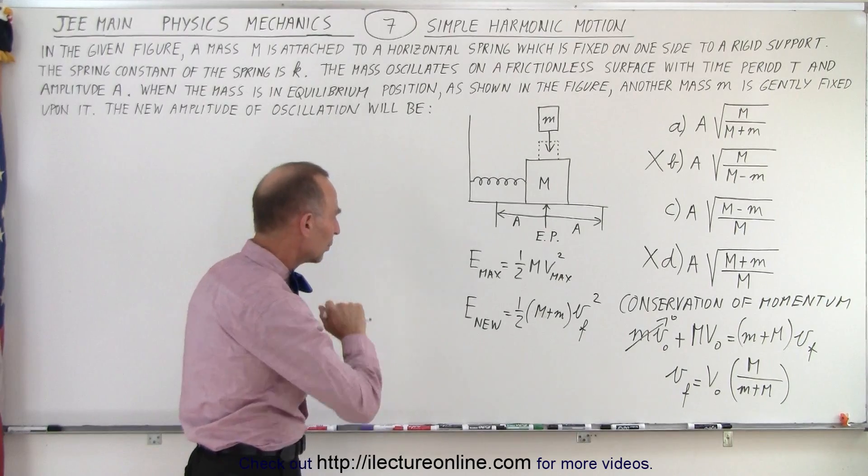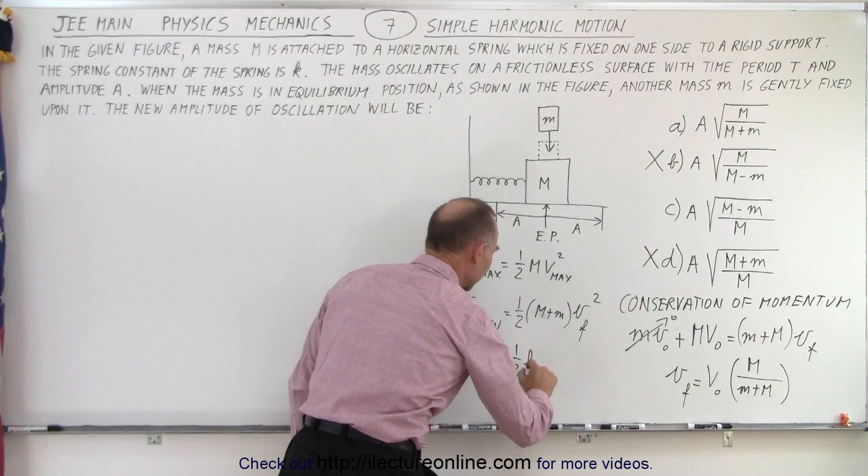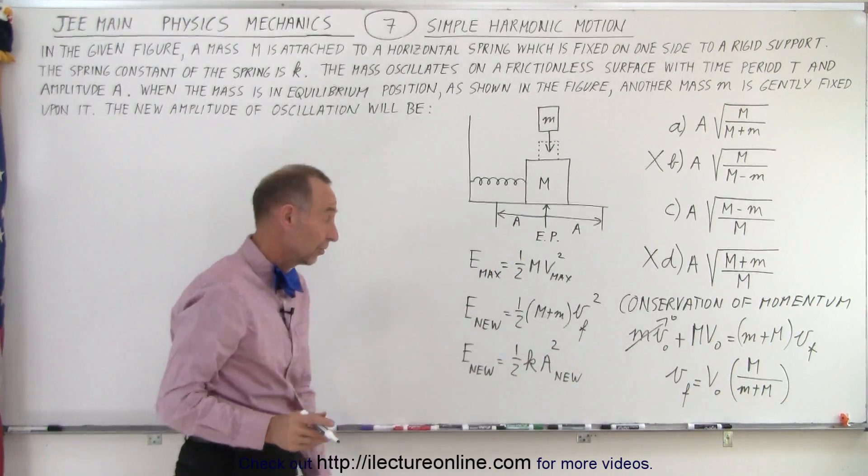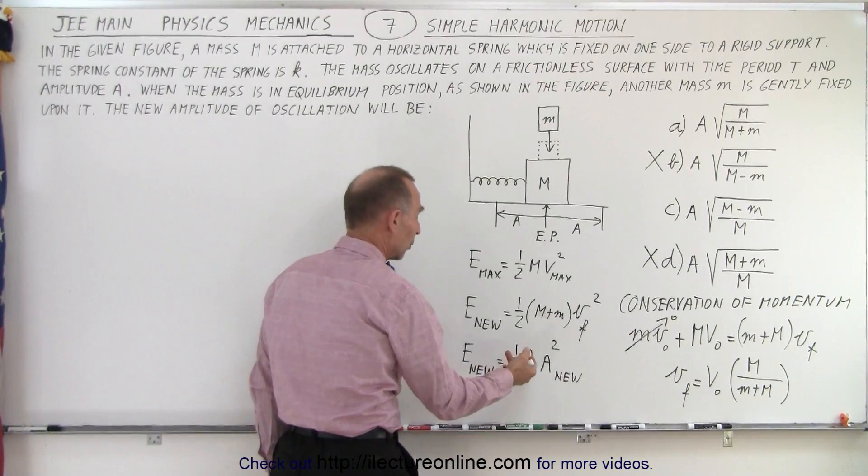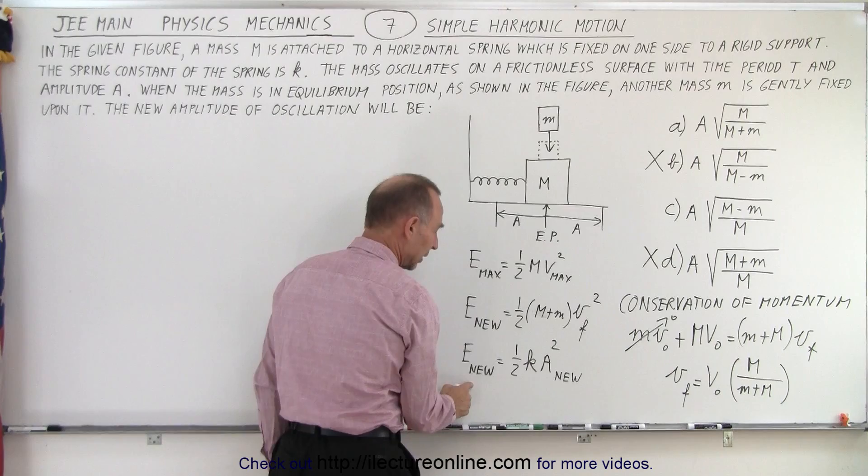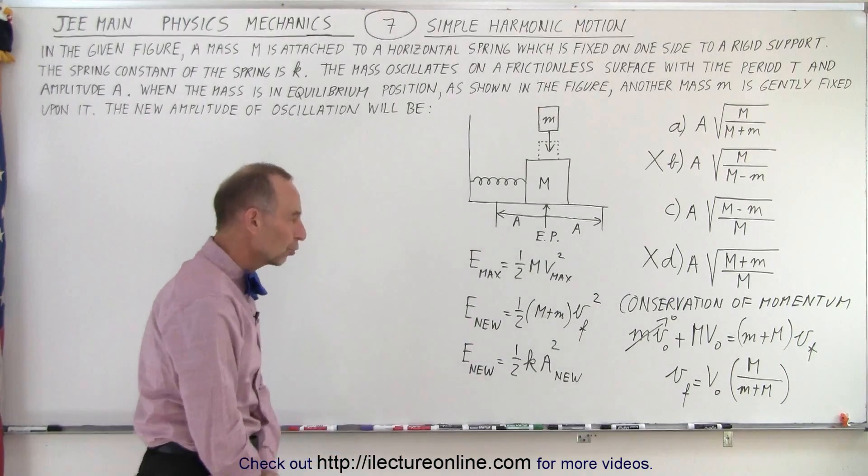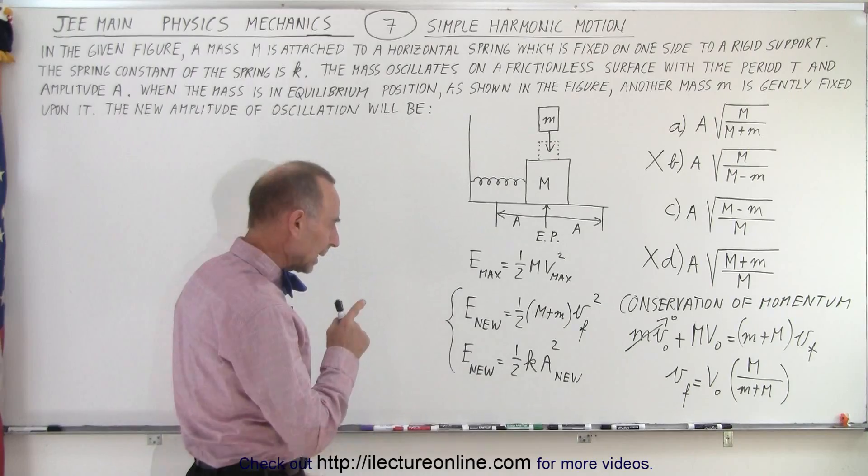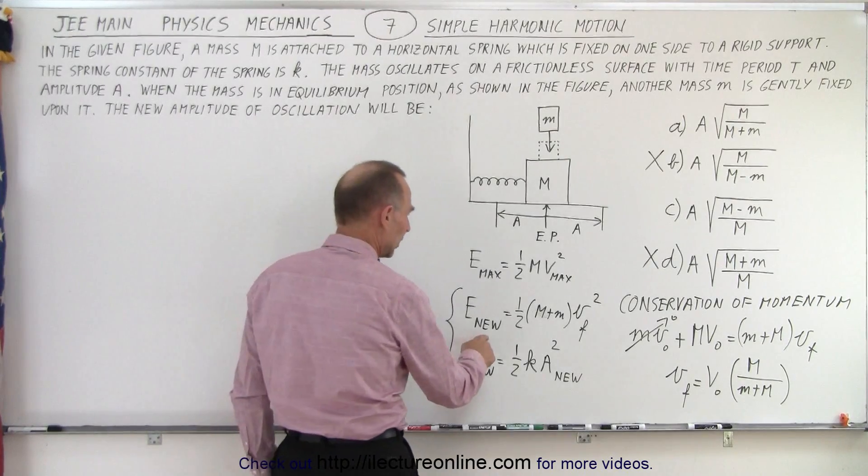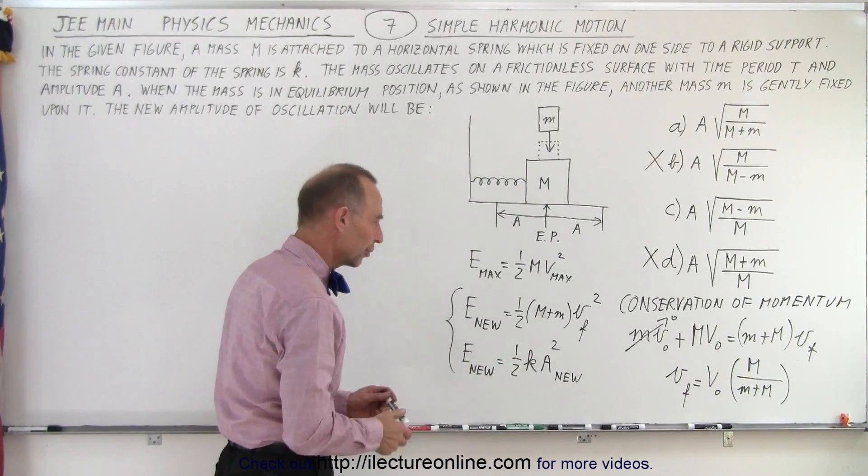Next, because we're dealing with the amplitude, we can also say that the E new is also equal to one half k amplitude new squared, right, because afterwards, what happens is, we have a new mass oscillating back and forth with a new maximum velocity, and that will then give us the equivalent potential energy stored in the spring when it's completely collapsed at the maximum amplitude. So we know that those two have to be equal to each other. Now it becomes a little tricky. Where do we go next?